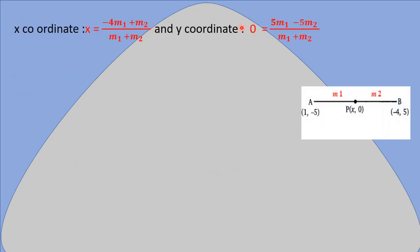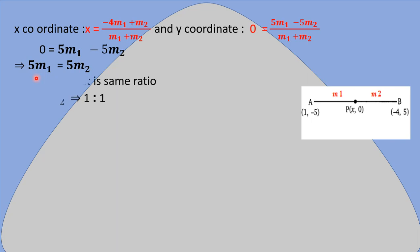Taking the y-equation: 0 = (5M1 - 5M2) / (M1 + M2). Cross-multiplying gives 0 = 5M1 - 5M2, so 5M2 = 5M1, and cancelling 5 from both sides gives M1 = M2. This means both sections of the line divided by point P are equal, so the line is divided in the ratio 1 : 1.